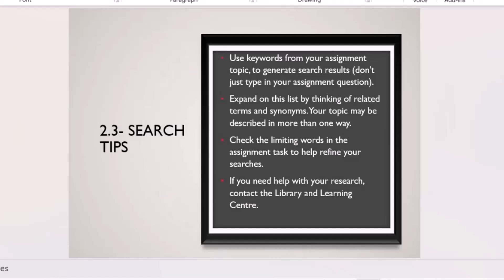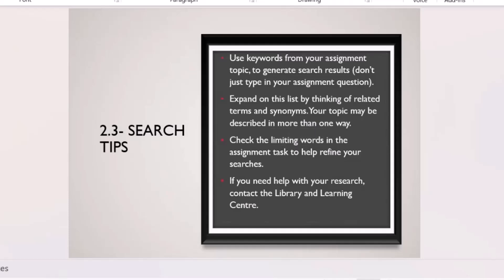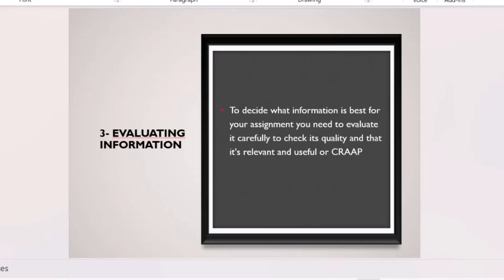When gathering articles, keep the limitation in mind — articles will pop up, but focus on those relevant to your specific context, such as higher education. Once you have your articles, evaluate those found via Google. Articles from your online UNISA library databases are already academic and don't need evaluation. Everything in those databases is academic, so you don't need to use the CRAAP test for those.